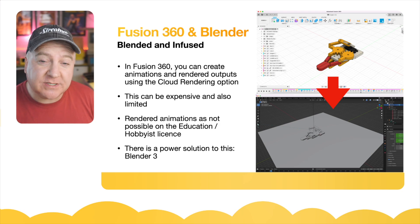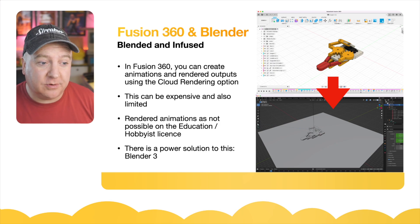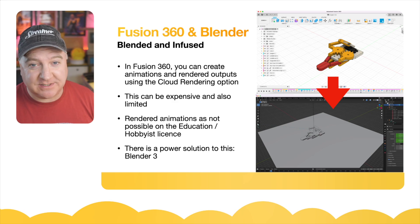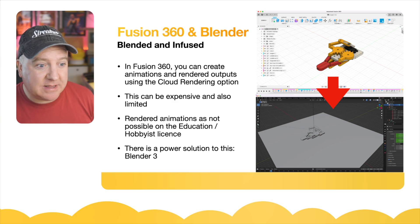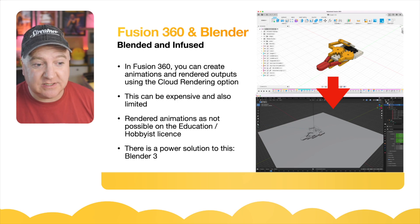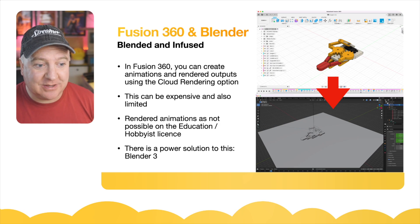Blender is completely free. In Fusion 360 you can create animations and rendered outputs using the cloud rendering option, but this can be really expensive — you need the full-blown license and you get 100 credits to begin with. Rendering animations is not possible on the education or hobbyist license because you need that cloud rendering option. This solution is really neat because it's completely free and it's powered by Blender.